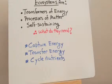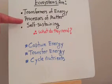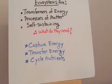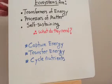So ecosystems are the transformers of energy. They're the processors of matter and they're self-sustaining. So they're transforming this energy from light to chemical energy. They're processing the matter, the carbon, and the hydrogen and the oxygen that we're finding in those molecules. But they do this in a self-sustaining way. So what do they need to be able to do that? Well, they're capturing that energy, they're transferring the energy then from one organism to the next, and they're cycling the nutrients. So we're going to take a bit of a look at those three things.